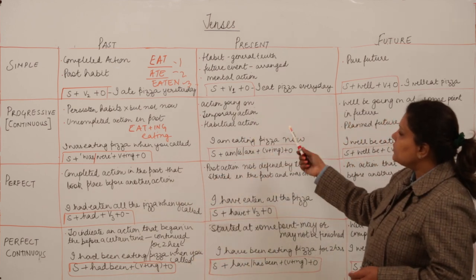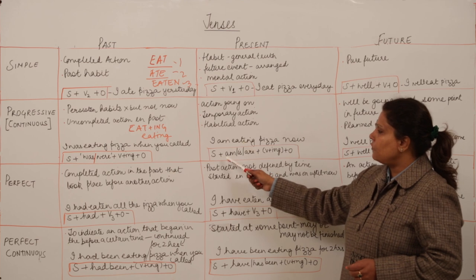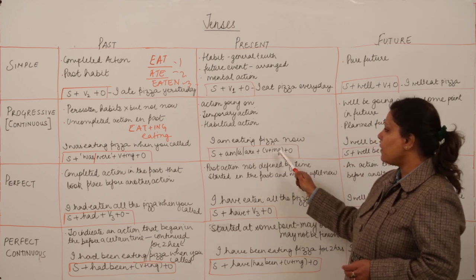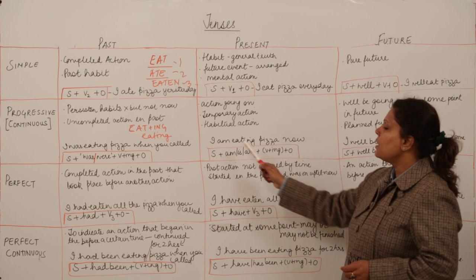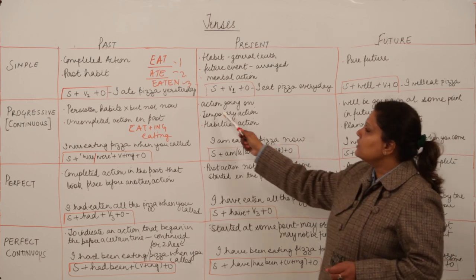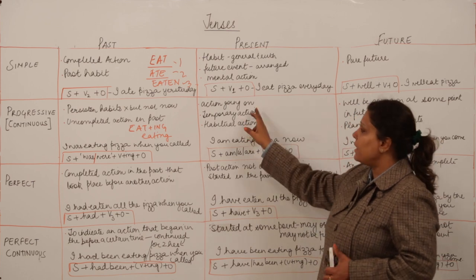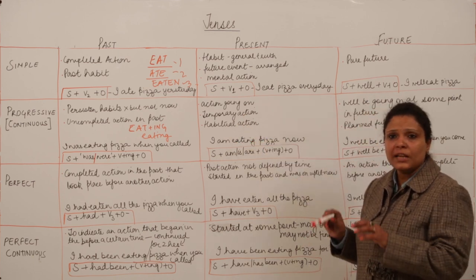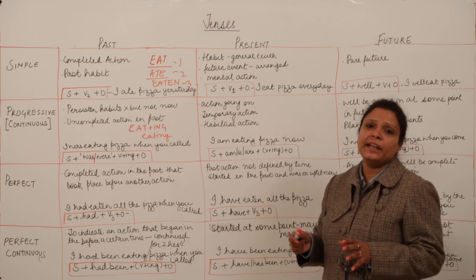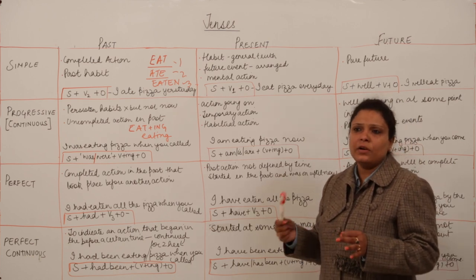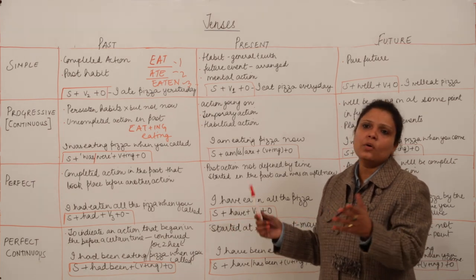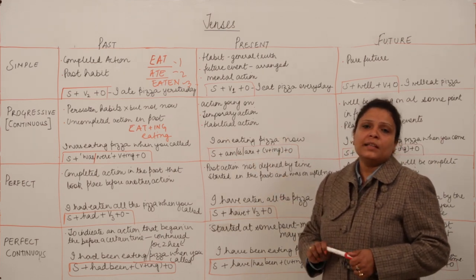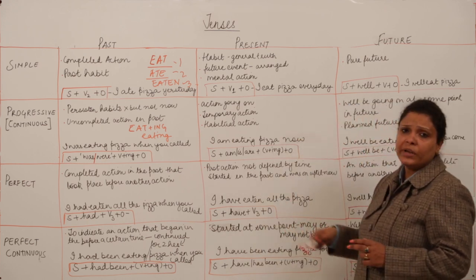In the present progressive tense, we use the form am, is, or are. The helping verbs become the present helping verbs plus the verb form -ing, plus object: 'I am eating pizza now.' This is used for an action going on at the present time, or a temporary action in a wider frame of time but not exactly at present — like 'I am reading a novel these days.' Also for habitual actions: 'I am walking every day these days.'